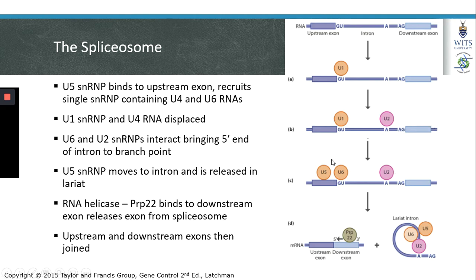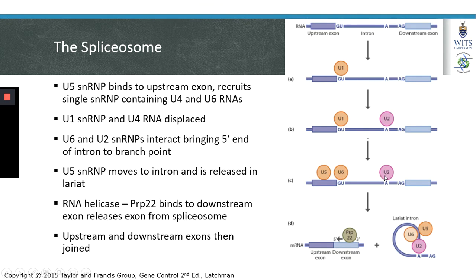Following binding of U2, the U5 SNRP binds to the upstream exon, and once bound, it recruits a single SNRP containing both U4 and U6 RNAs. This results in dissociation of the U1 SNRP as well as the U4 RNA, leaving the U6 SNRP remaining at the G residue at the intron splice junction. The U6 SNRP then interacts with the U2 SNRP, bringing the GU and the branch point into close proximity.